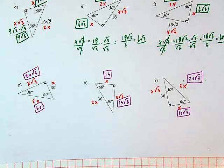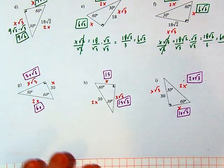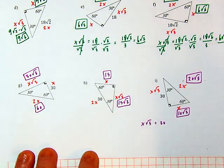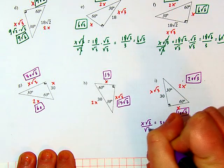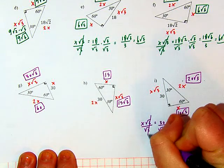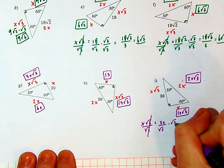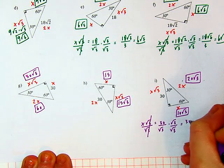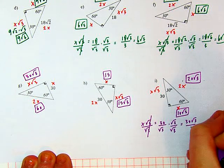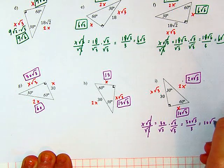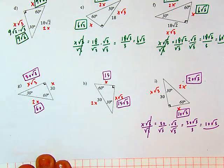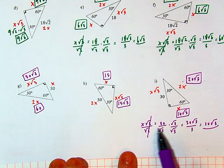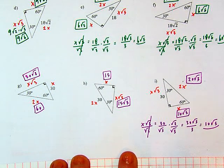For the last one, I'm giving you the longer leg: x root 3 is 30. Using the shortcut, take a third of 30 and multiply by root 3 — that gives 10 root 3 for the short leg. Then double to get a hypotenuse of 20 root 3. To verify without the shortcut: x root 3 equals 30, divide each side by root 3, rationalize by multiplying by root 3 over root 3, and we get 30 root 3 divided by 3 — confirming 10 root 3.